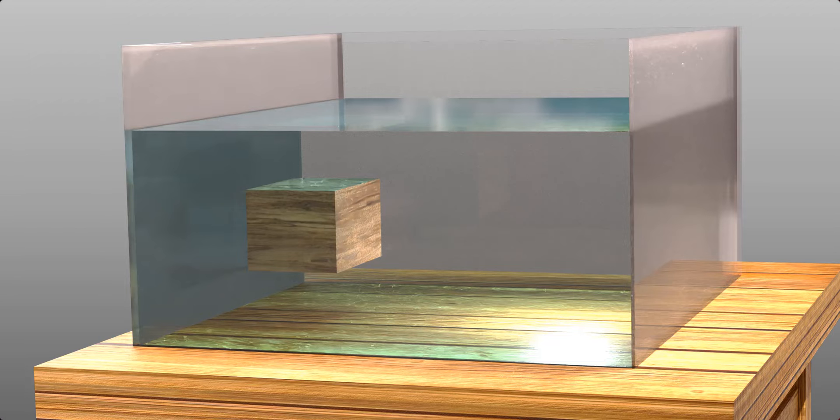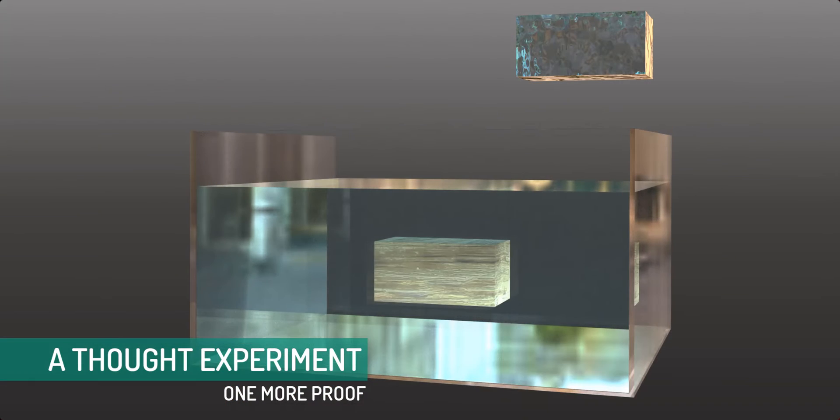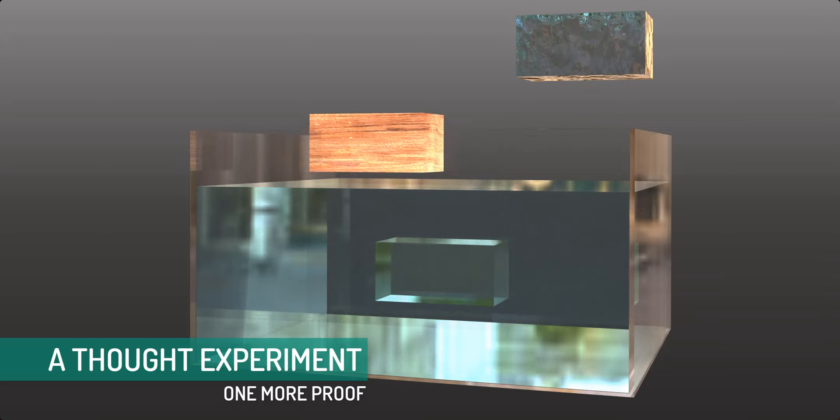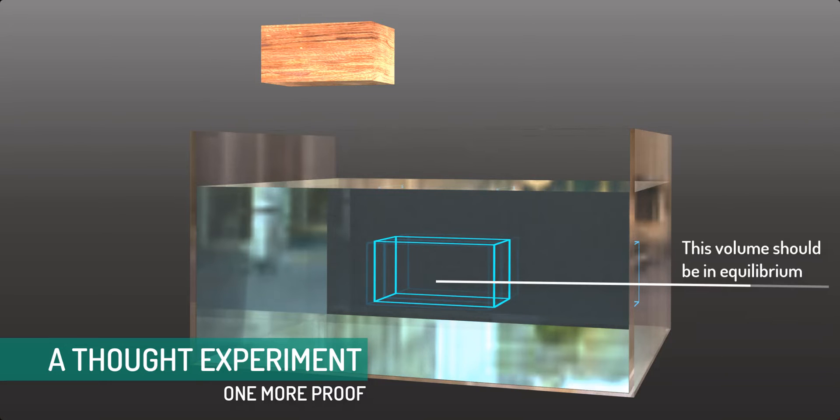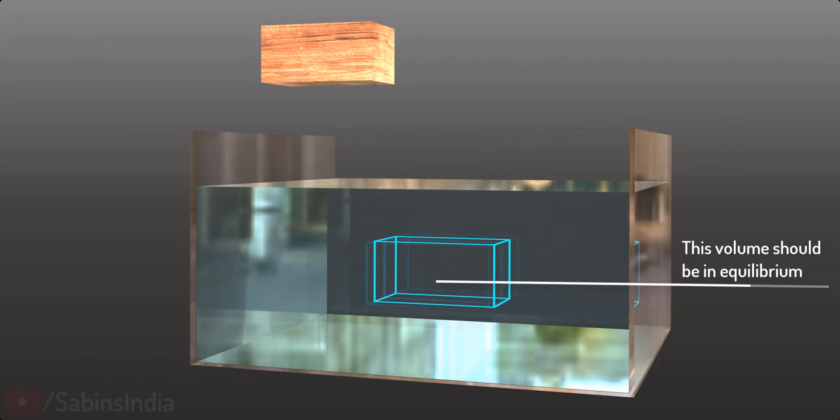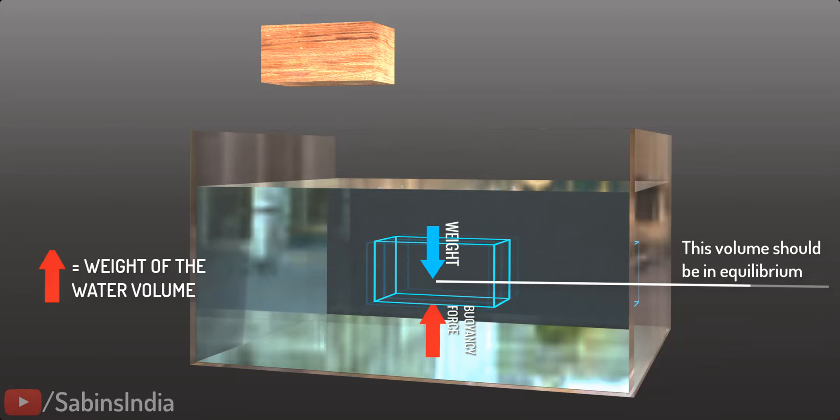An interesting thought experiment can also prove Archimedes' principle. Assume the space occupied by the wooden block is replaced by water volume of the same size. This is a very simple situation. The water volume inside the lines should be in equilibrium, which means the surrounding water should exert a force equal to the weight of the water inside. There you have it. The force exerted by the surrounding fluid is the same as the weight of the displaced water. This exactly is Archimedes' principle.